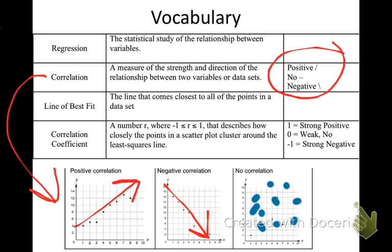A good example of positive correlation is the amount of time you study and the grade you get on a test — the more you study, the better you do. For no correlation, consider the color of your eyes and how tall you are. Eye color and height have nothing to do with each other. Those drawn on the board were the lines of best fit, showing the trend for each correlation type.